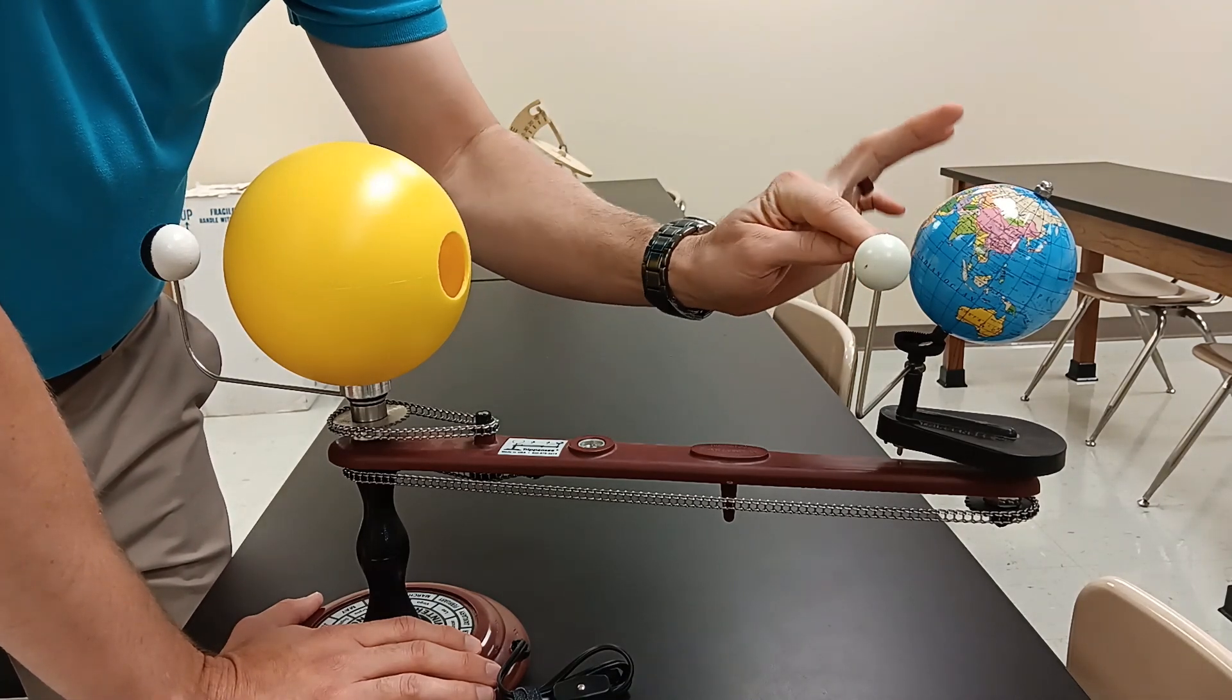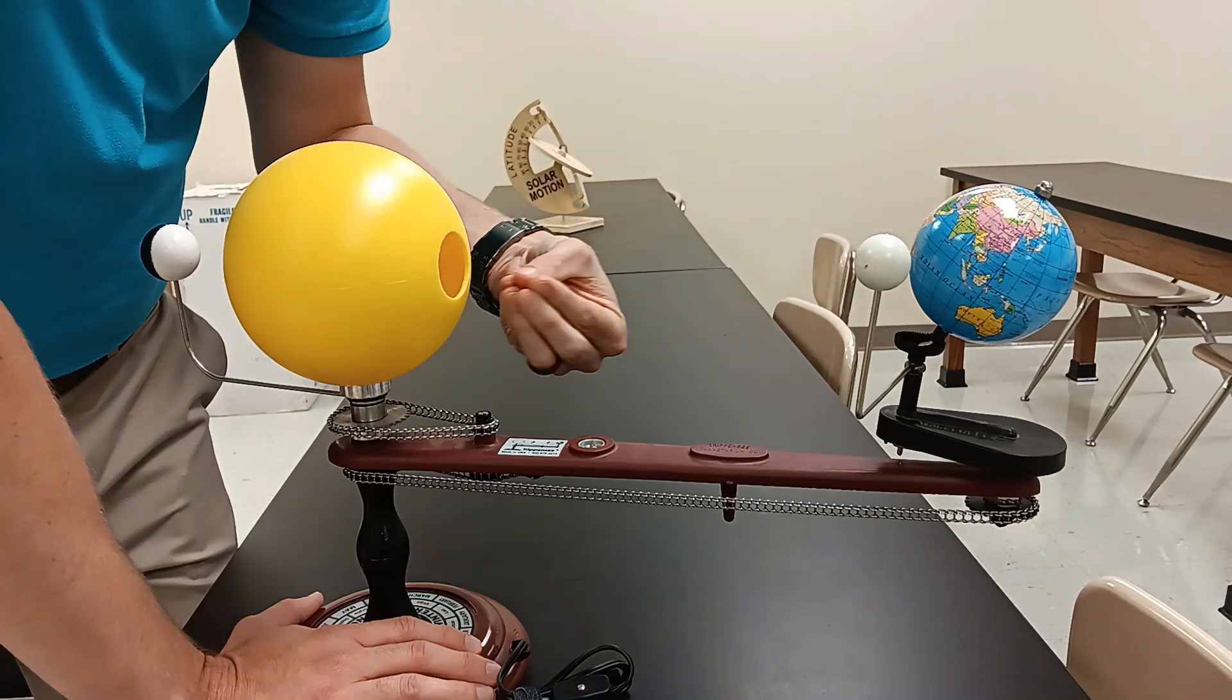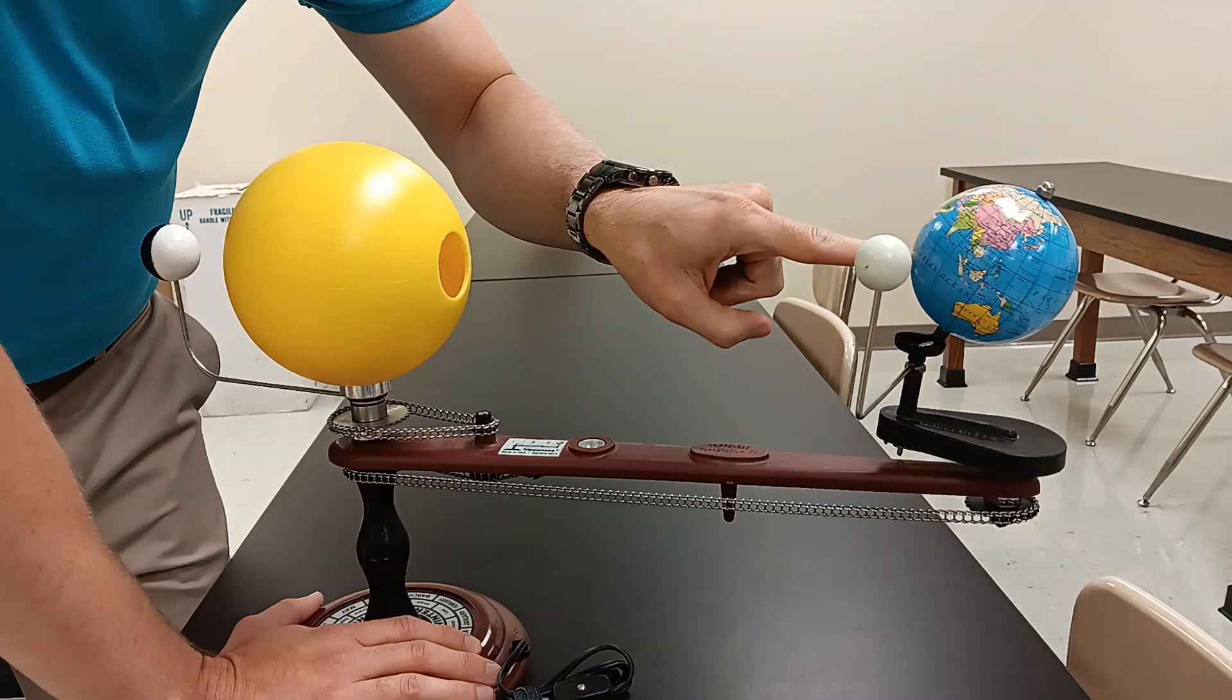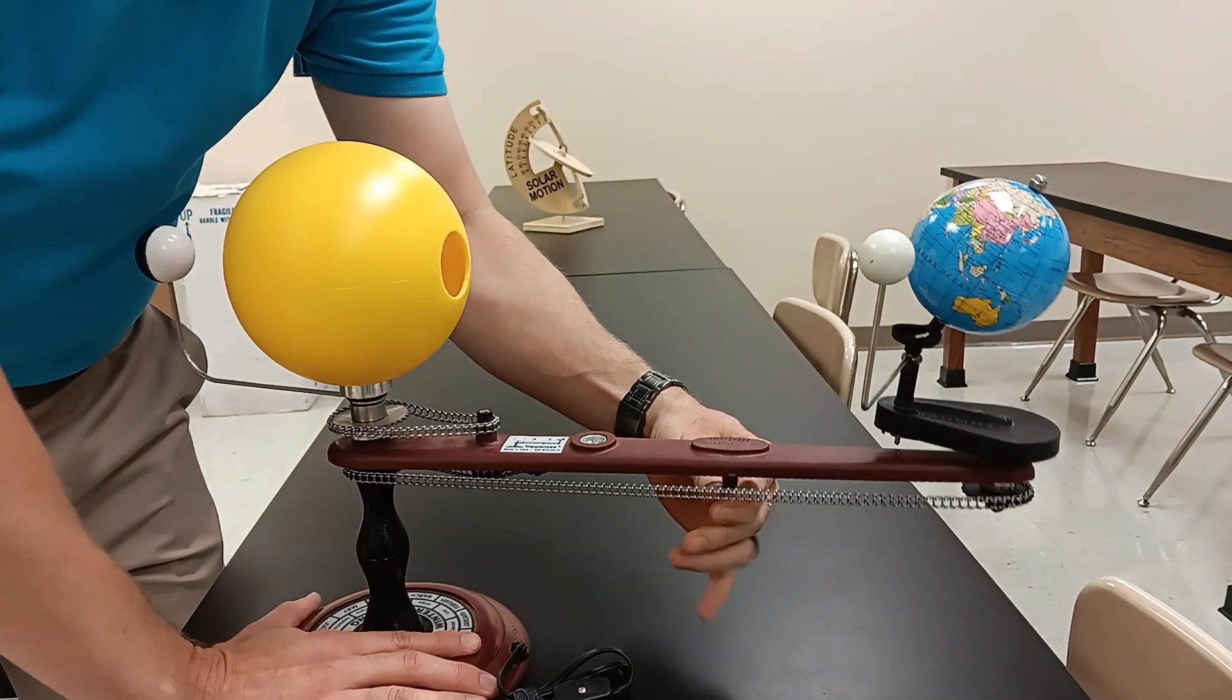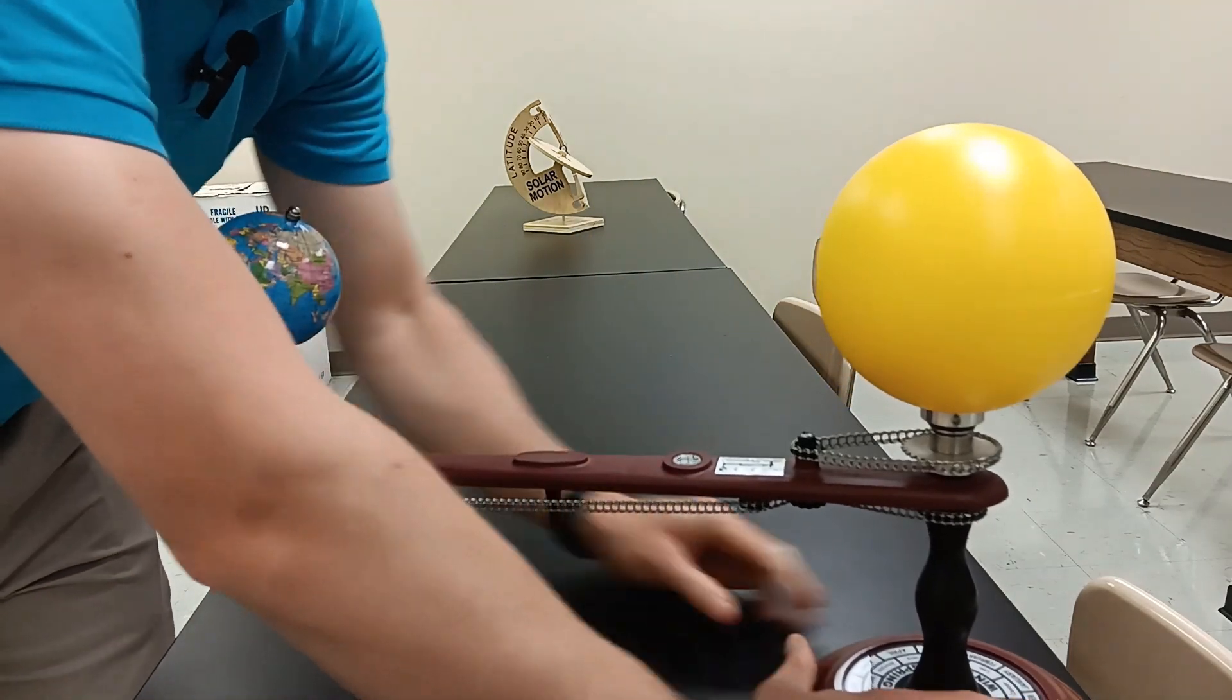Just the opposite's occurring in the Southern Hemisphere. Southern Hemisphere is tilted toward the sun. That light coming in is going to be more intense and cause it to be summertime. All right. So I'm going to move this around here and switch sides of the table.